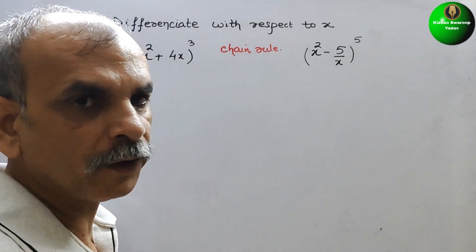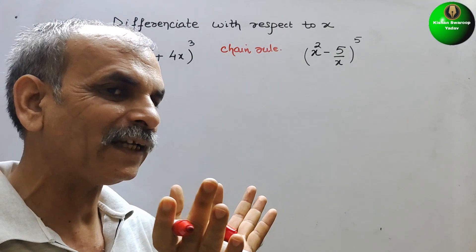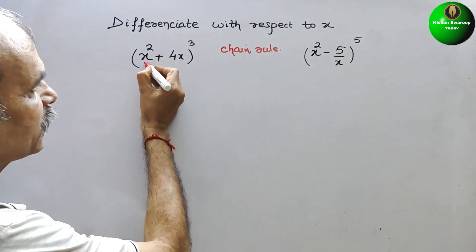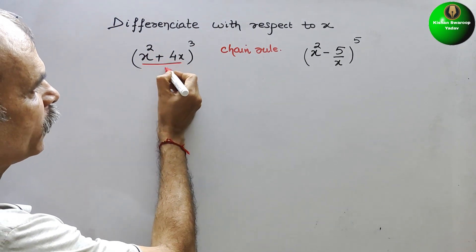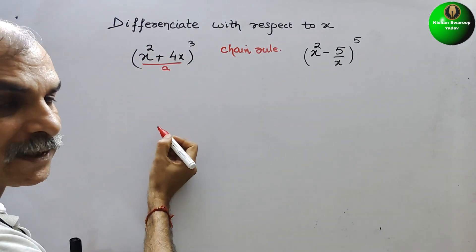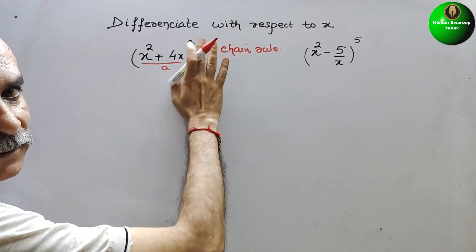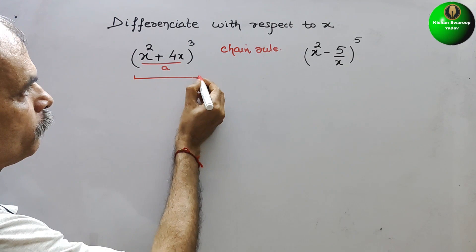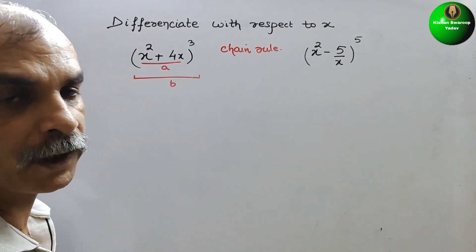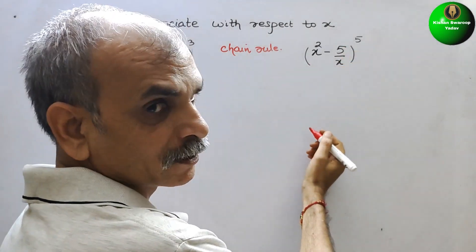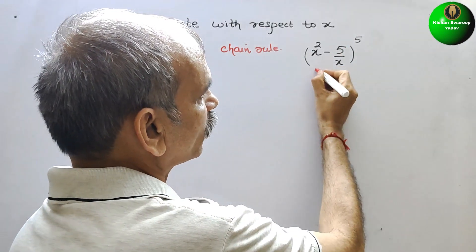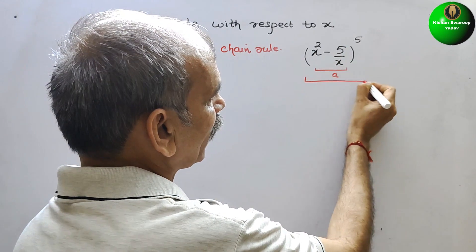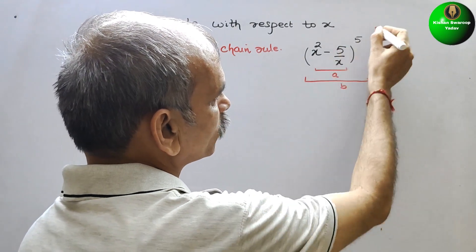In the chain rule, whatever is inside the bracket, we take that as 'a'. So x² + 4x is your 'a'. The bracket with the power is your 'b'. Similarly for the second expression, x² - 5/x is your 'a', and the whole bracket with power 5 is your 'b'.